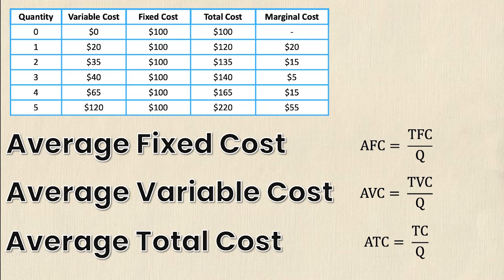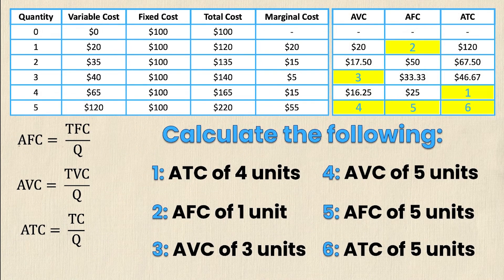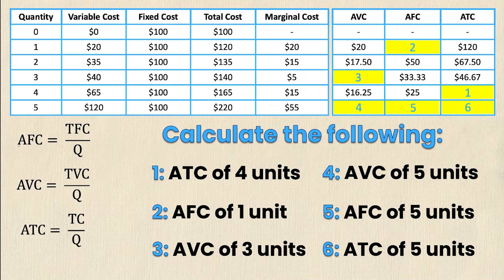Now let's take a look at a slightly tougher example where we calculate the averages. We're being asked to calculate: the average total cost of four units, the average fixed cost of one unit, the average variable cost of three units, and the average variable cost, average fixed cost, and average total cost of five units — shown as yellow boxes in the top right table. This is something you should become very familiar with, as you will certainly see it on your final exam and homework questions.